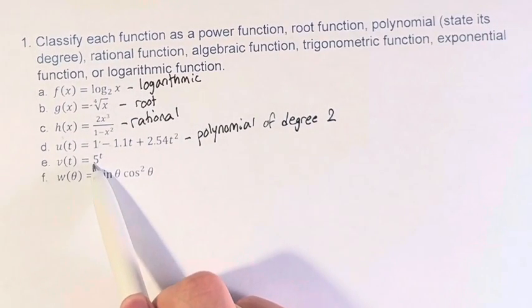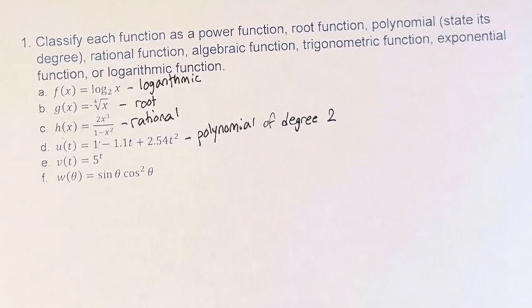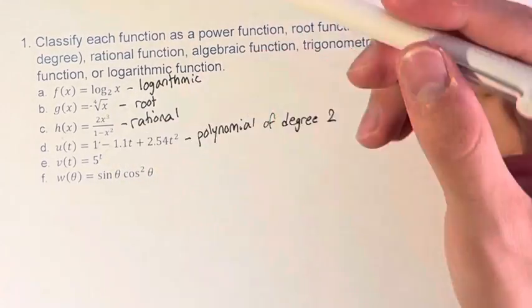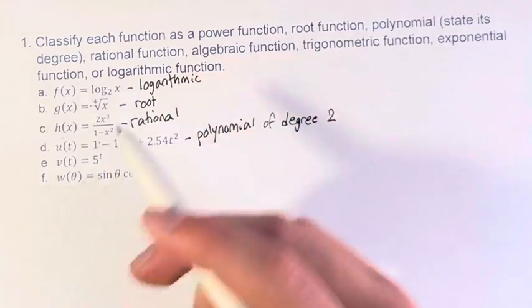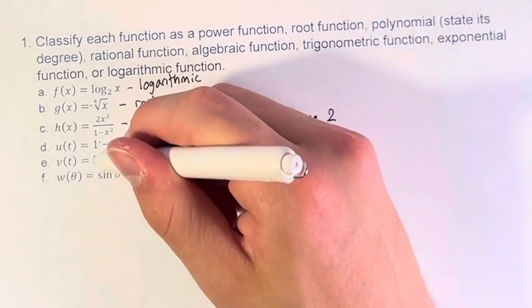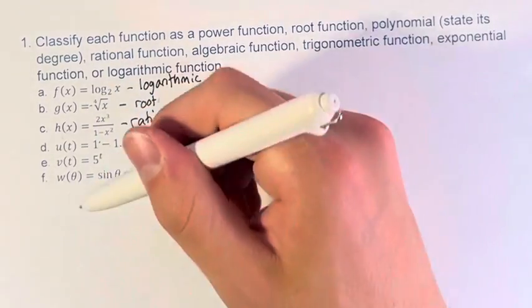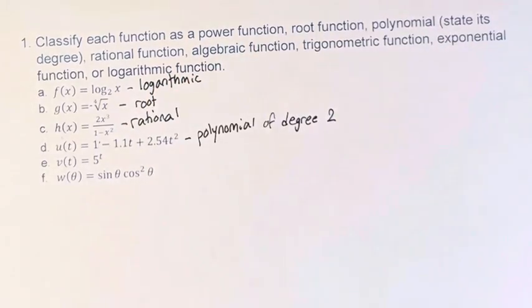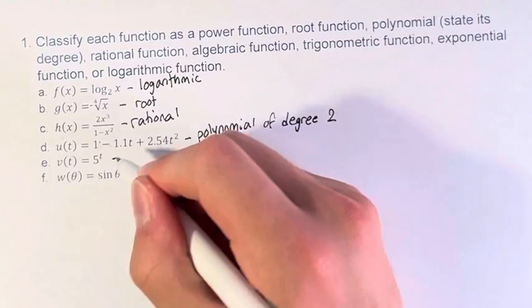v of t is equal to 5 to the t. This is an exponential function, because this is 5 to the t. The constant is in the base, and it's to the variable exponent. t to the 5, on the other hand, would be a power function, but this is an exponential.